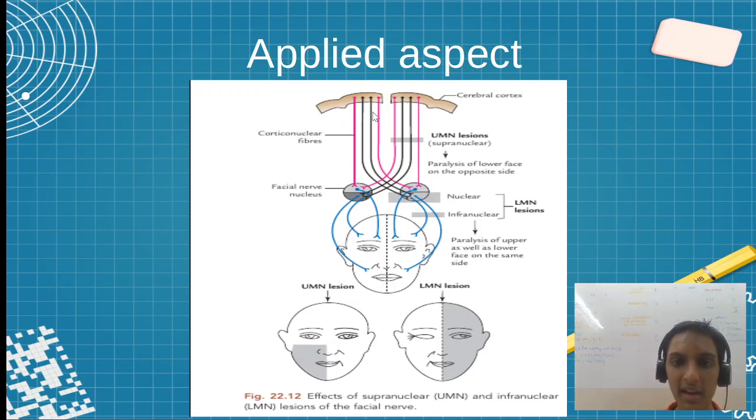What is UMN lesion? The cerebral cortical fibers coming from the cerebral cortex are lesioned. This means contralateral, one side of the face is affected. When it comes to LMN lesion, there is compression of the facial nerve at the stylomastoid foramen. Please remember this point. LMN lesion means compression of the nerve at the stylomastoid foramen. One total half of face will be affected.